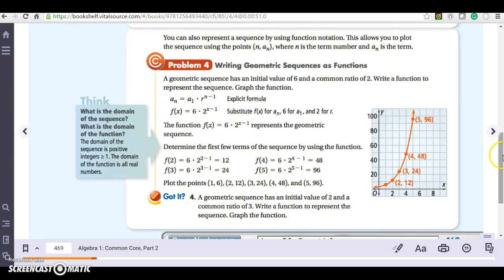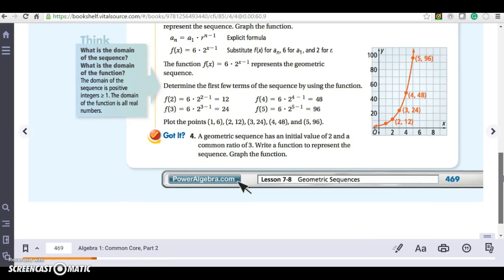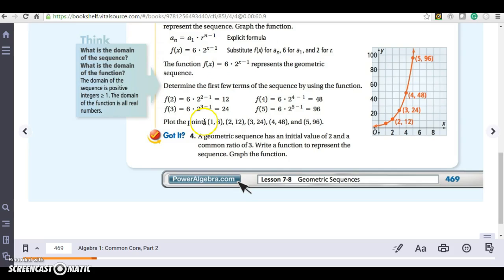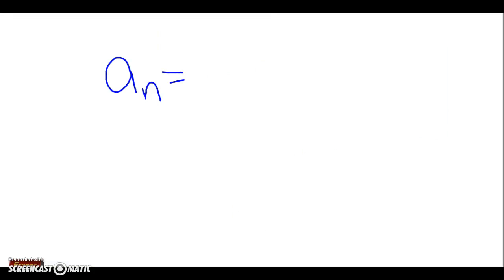So now let's look at guided problem 4. It says a geometric sequence with an initial value of 2 and a common ratio of 3. Write the function to represent the sequence. So if I write it first as a sequence, my initial value is 2 and my ratio is 3.